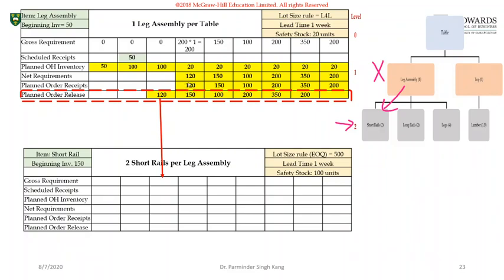In order to fulfill that requirement, the manufacturing of these leg assemblies starts one week earlier — week three — due to the lead time. However, in order to make these leg assemblies we need short rails, long rails, and legs. We need these children of leg assemblies within that week. So the demand for level two items will be determined based upon the planned order release date and planned order release quantities already determined at level one, because level one items are the parent to the level two items.